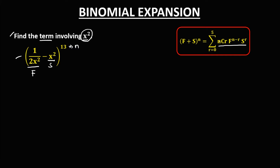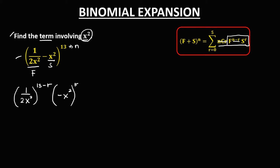From this formula, we can ignore the nCr part and only need this portion. We have the first term: 1 over 2 times x to the power 2, raised to the power n minus r, where n is 13 minus r. The second term is negative x to the power 2, raised to the power r.